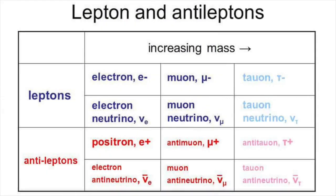For every lepton flavor, there's a corresponding antiparticle, known as an antilepton, that differs from the lepton only in that some of its properties have equal magnitude but opposite sign. According to certain theories, neutrinos may be their own antiparticle, though it's not currently known whether this is the case.